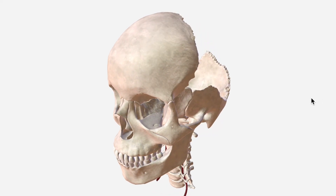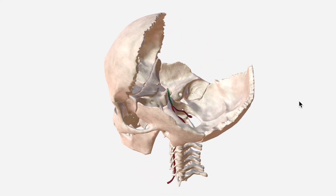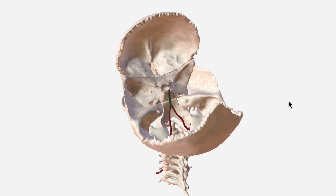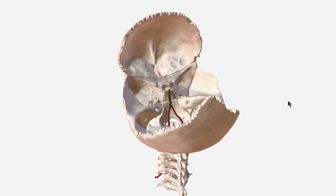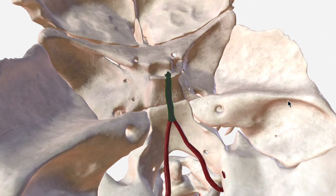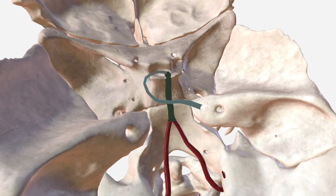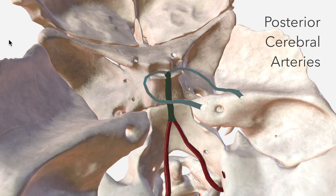In this video, we're going to talk about the basilar artery, which I have highlighted here in dark green. The basilar artery arises from the confluence of the paired vertebral arteries. It terminates by bifurcation into the left and right posterior cerebral arteries.